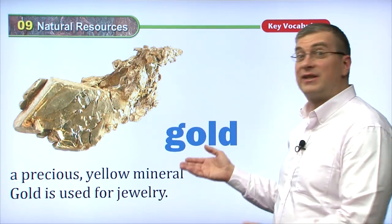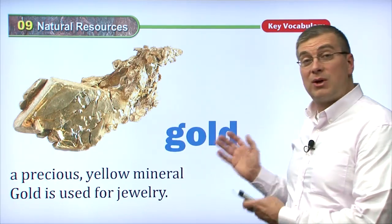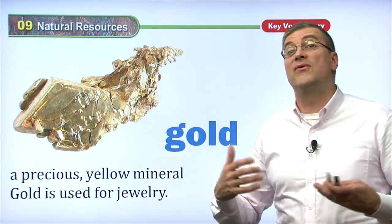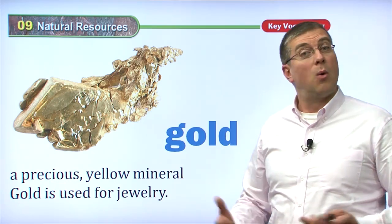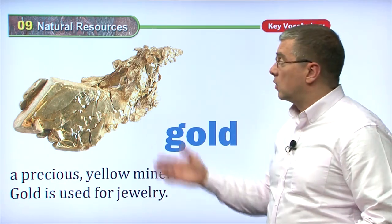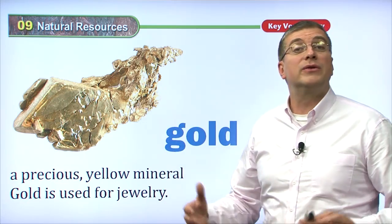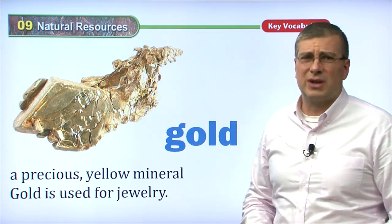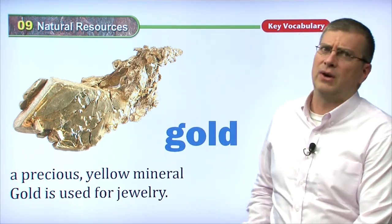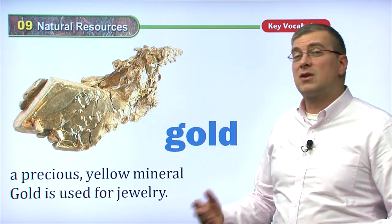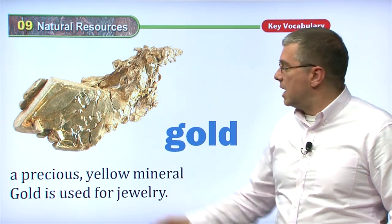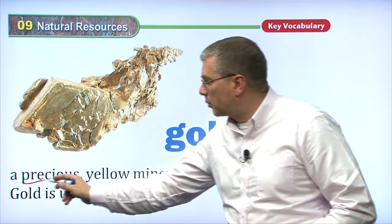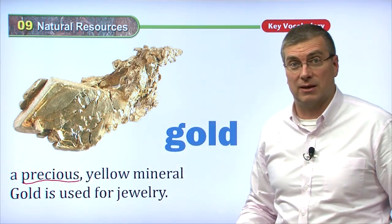Another resource is gold. Gold is a type of mineral — a very famous type of mineral. Why is it so famous? Because gold was used for money for thousands of years. It still is used as money, but we don't usually use gold as money because it's very heavy to carry around and it's also very expensive. Gold is a precious mineral. What does precious mean? Precious means expensive — it's very valuable.